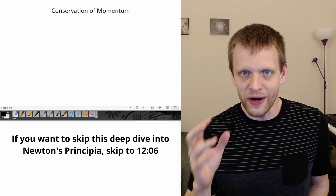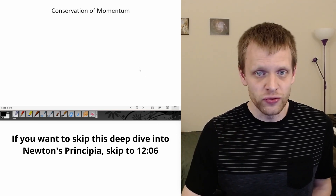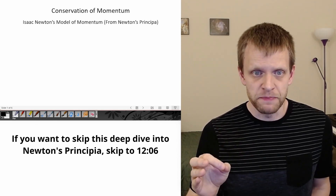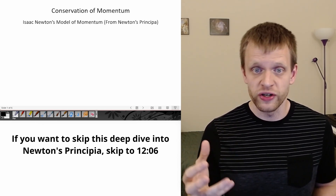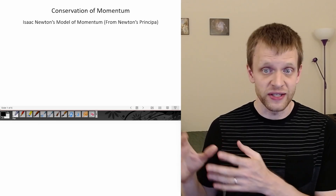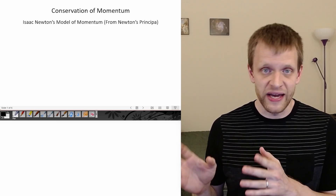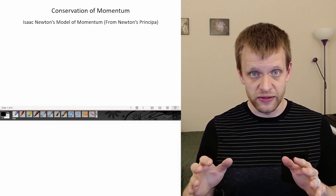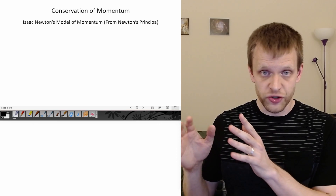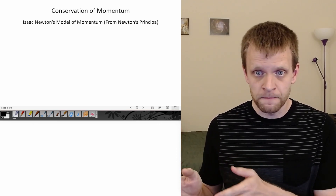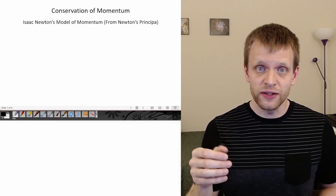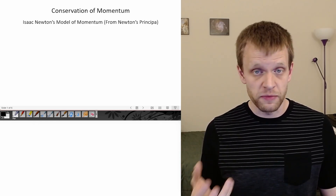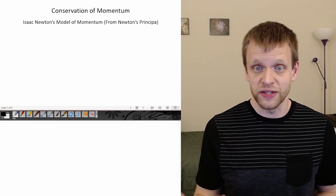Let's go right back to the source: Isaac Newton's key work, the Principia. I'm going to do a bit of a deeper dive into this because the proponents of this alternative model claim that theirs is the model that Newton used — and this is simply not the case, as we'll see. I'm going to leave a link to the English translation of Newton's Principia in the description along with page numbers for some of these excerpts so you can check this out yourself.